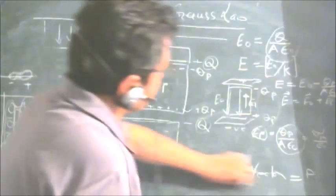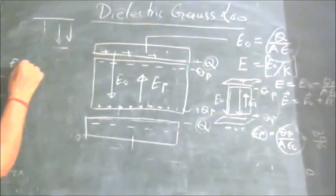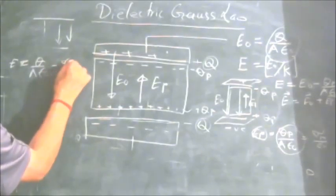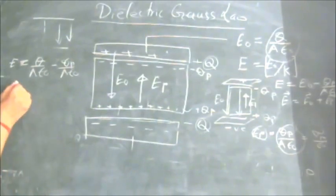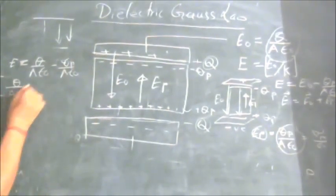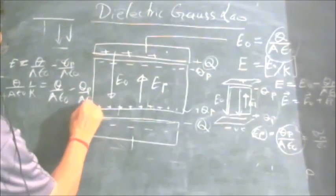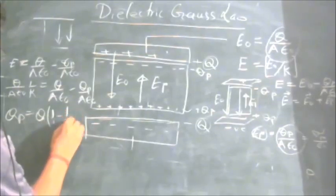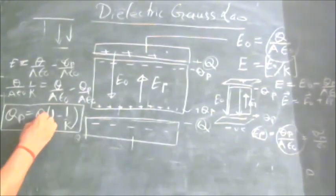Taking the derivation further: E0 = Q / (A epsilon_0) and E_P = Q_P / (A epsilon_0). Since E = E0 / K = Q / (A epsilon_0 K), we substitute and get Q / (A epsilon_0 K) = Q / (A epsilon_0) minus Q_P / (A epsilon_0). This gives us the important expression Q_P = Q(1 - 1/K). This is the value of the induced charge on the surface of the dielectric and how it relates to the free charge Q.